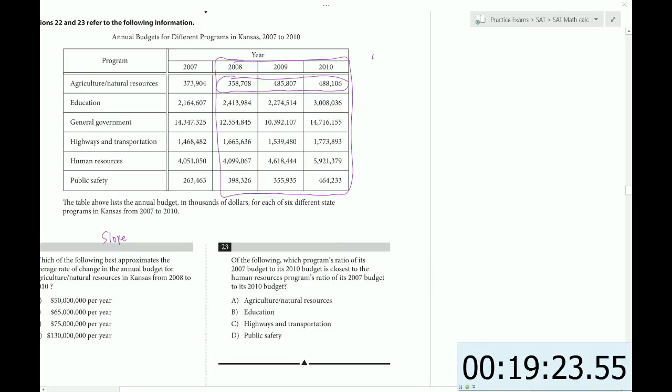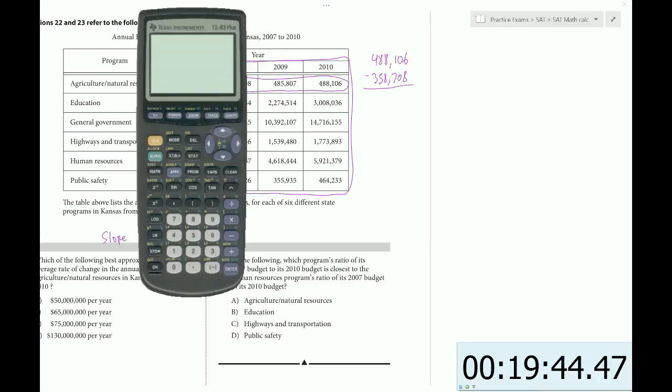To find the slope, we could do change in Y over change in X. So in this case, the change in Y, we'll use the endpoints, 488,106, and we'll subtract from that 358,708. That'll be our change in Y. The change in X is just going to be two years, 2010 minus 2008. So let's use the calculator to help us out. We'll have 488,106, minus 358,708.